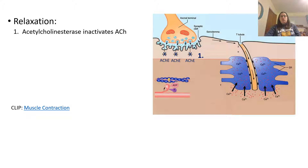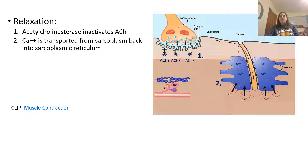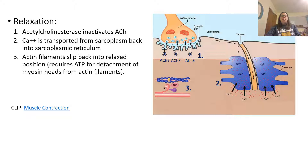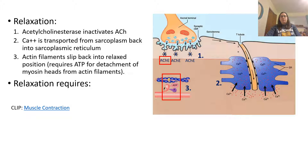For relaxation, the acetylcholine needs to be removed. An enzyme called acetylcholinesterase inactivates the acetylcholine by breaking it apart. This causes calcium to be pumped back into the sarcoplasmic reticulum. With calcium gone, the actin filaments slip back into their relaxed position because troponin and tropomyosin cover the binding sites and the myosin heads can't attach — so the filaments slide back to their original position. Relaxation also requires things: the enzyme to break down acetylcholine and ATP. Energy is required to both contract and relax the muscle.